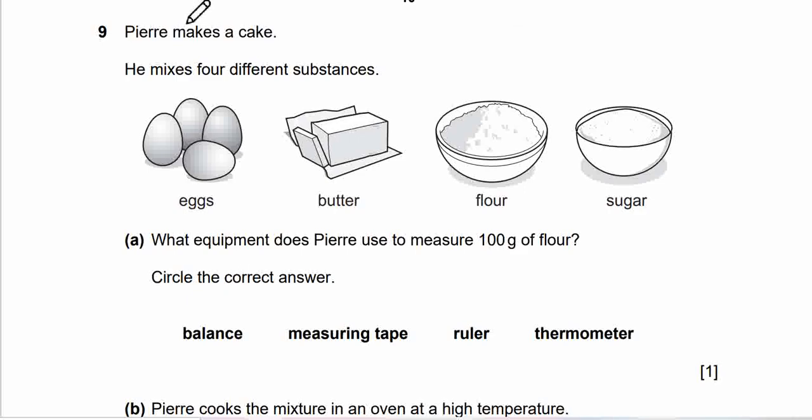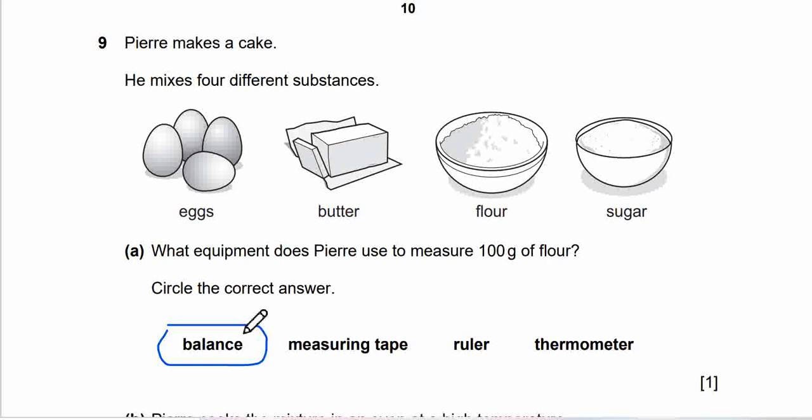Question 9. Pierre makes a cake. He mixes four different substances: eggs, butter, flour, sugar. Question A. What equipment does Pierre use to measure 100 grams of flour? Circle the correct answer: balance, measuring tape, ruler, or thermometer. Here's your answer. So balance is to measure the mass of flour, 100 grams of flour.